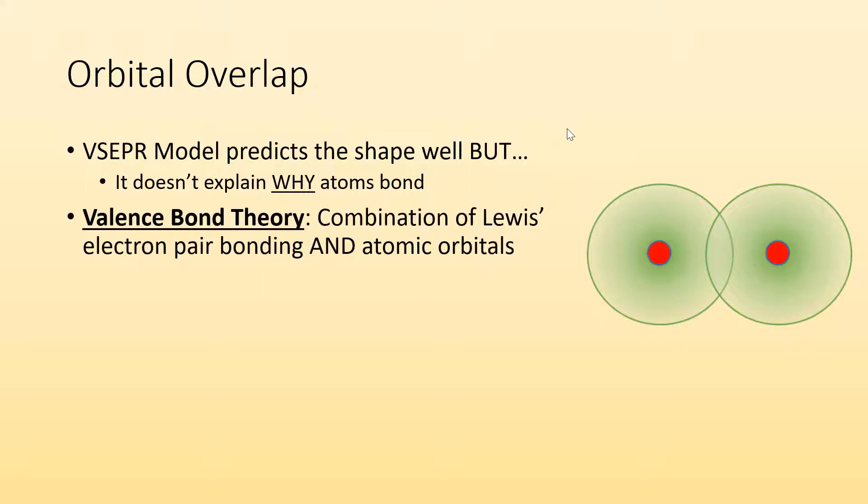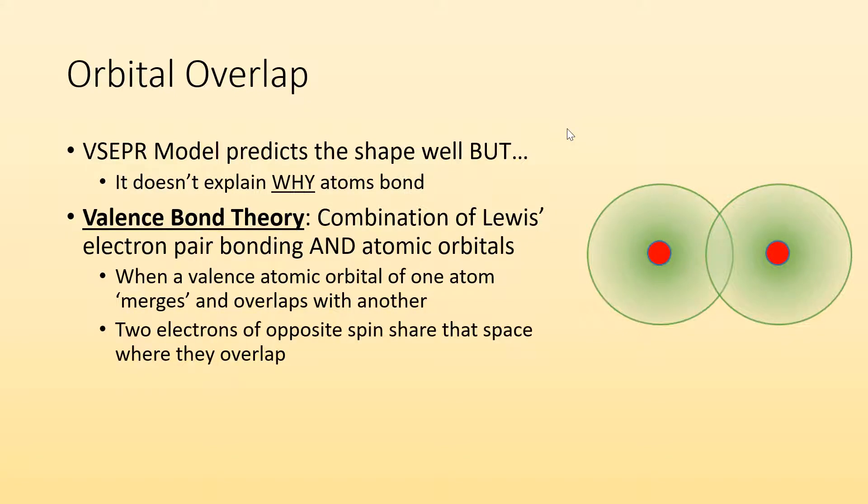So the valence bond theory is the combination of Lewis's electron pair bonding and atomic orbitals. We're going to put some of this stuff together. When a valence atomic orbital of one atom merges and overlaps with another, these two electrons of opposite spin share that space where they overlap, where these atoms are overlapping, those unpaired electrons are hanging out there together.